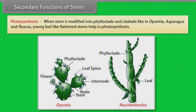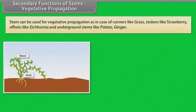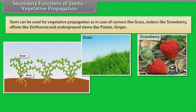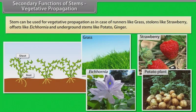Photosynthesis: when stem is modified into phylloclade and cladode, as in Opuntia, Asparagus and Ruscus, young leaf-like flattened stems help in photosynthesis. Vegetative propagation: stem can be used for vegetative propagation, as in case of runners like grass, stolons like strawberry, offsets like Eichhornia, and underground stems like potato and ginger.